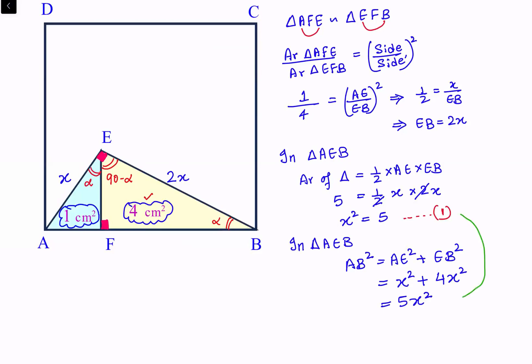Now using observation 1 and putting the value of X² as 5, we get AB² is 5 times 5 which is 25 cm². And AB² is nothing but area of the square, and this is our answer which we were looking for.